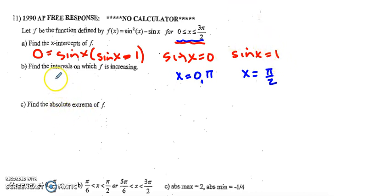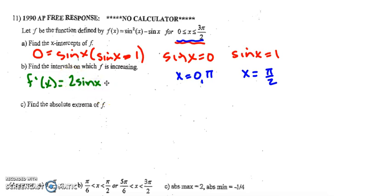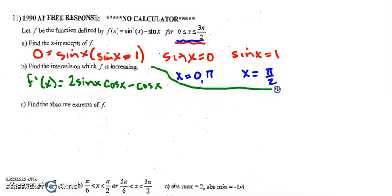Next we're asked on what intervals the function is increasing, so we need the first derivative. Using the chain rule: f'(x) = 2 sine x times cosine x, minus cosine x. Setting the derivative equal to zero and factoring out cosine x gives us: cosine x times (2 sine x minus 1).